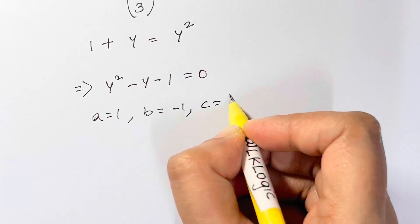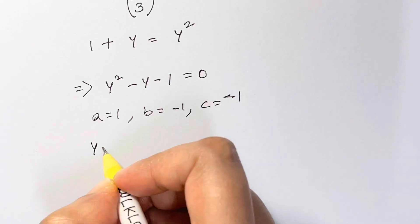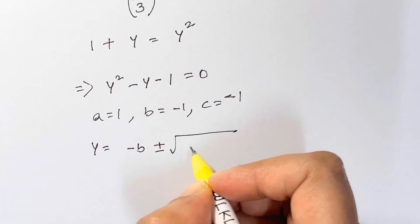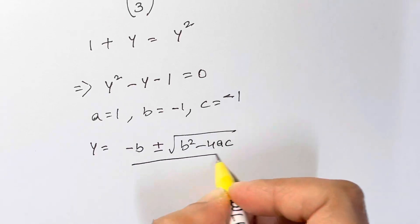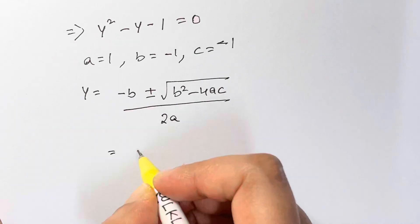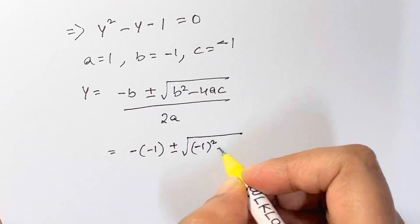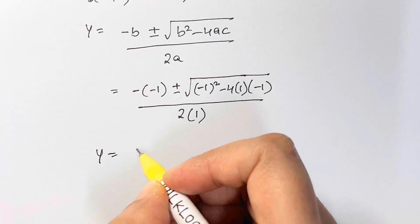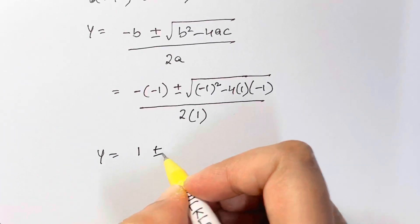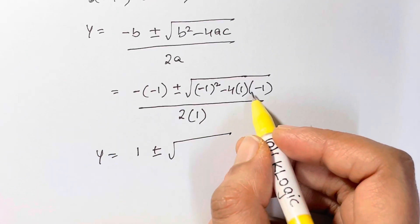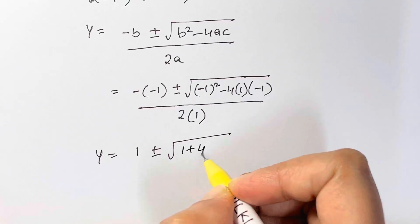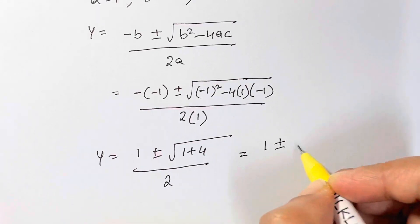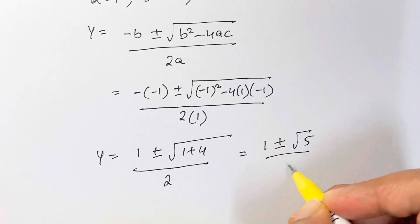Using the quadratic formula with a = 1, b = −1, c = −1: x equals negative b plus or minus square root of b² minus 4ac, all over 2a. Substituting these values gives 1 plus or minus square root of (1 plus 4), over 2, which simplifies to 1 plus or minus square root of 5, over 2.